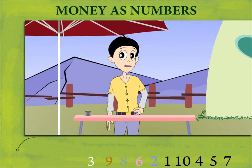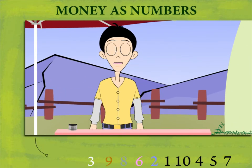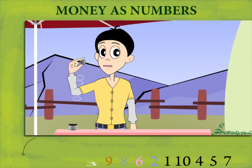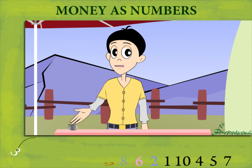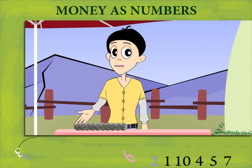Money as numbers. Robin has a 1 rupee coin, and he makes a pile of 10 coins.